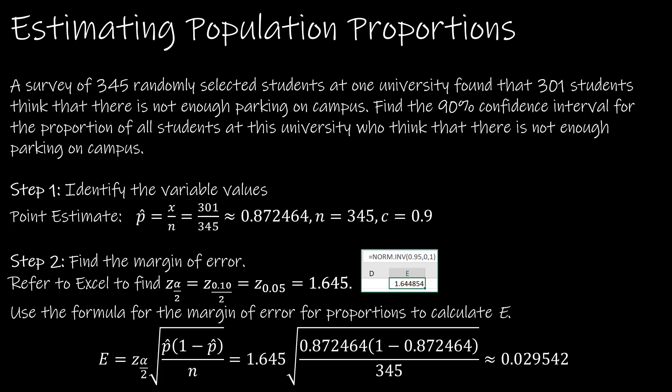Let's take a look. Again we're going to go through this step-by-step, sort of by hand. We have a survey of 345 randomly selected students found that 301 students think there is not enough parking on campus. Find the 90% confidence interval for the proportion of all students at the university who think there is not enough parking.